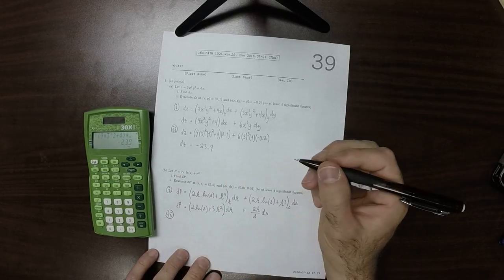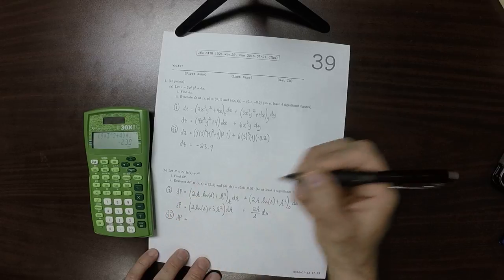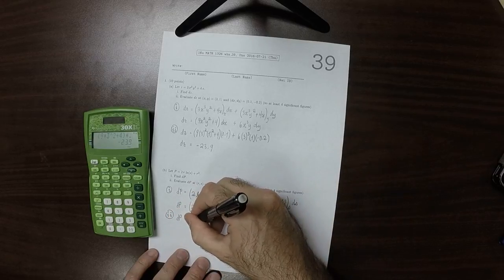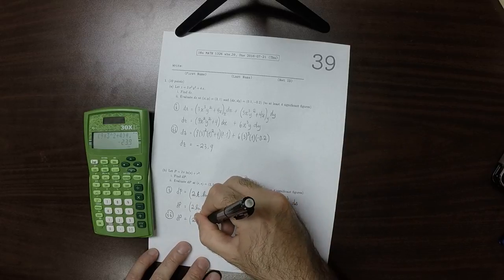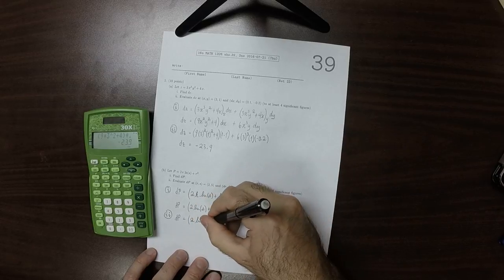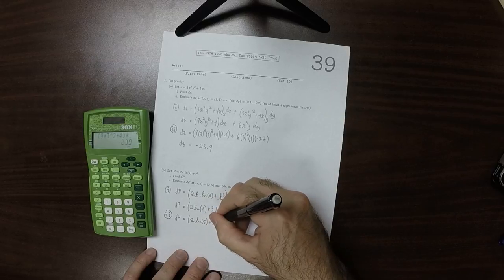Evaluate at this position. So dp is 2 log of 5 plus 3 times 2 squared.